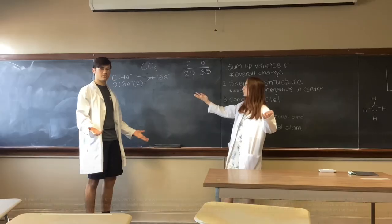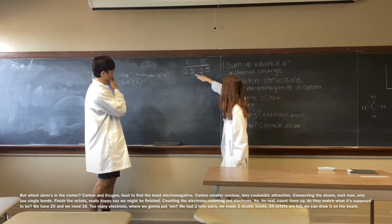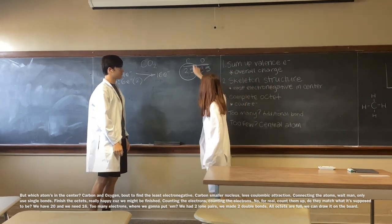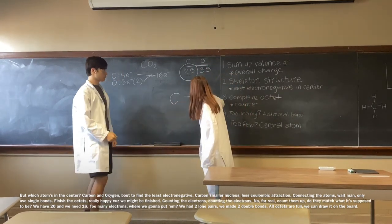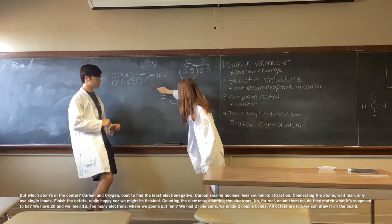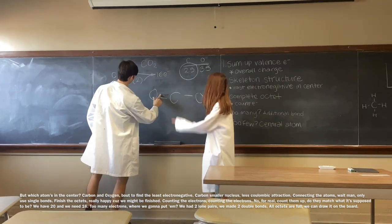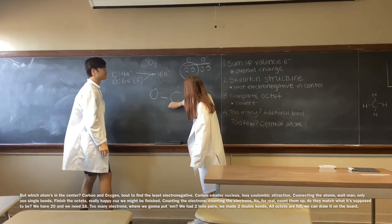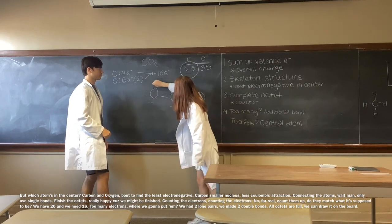But which atom's in the center? Carbon and oxygen — find the least electronegative. Carbon's further from the nucleus, so cool, less attraction. Connecting the atoms — only use single bonds. Finish the octets, really happy because we're finished. Counting the electrons, counting the electrons.